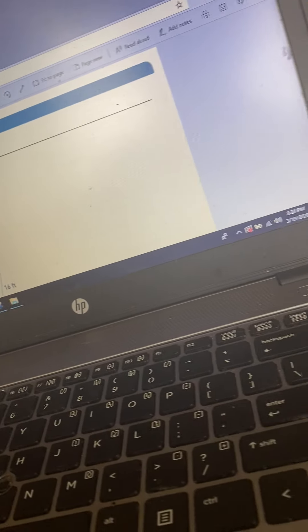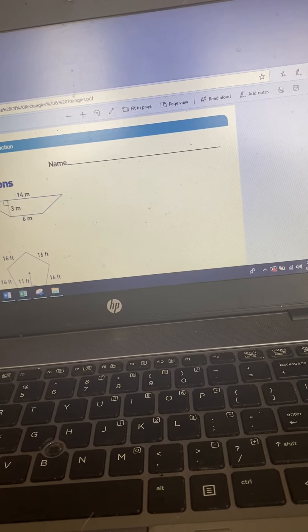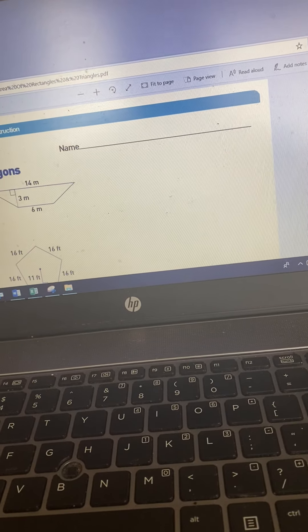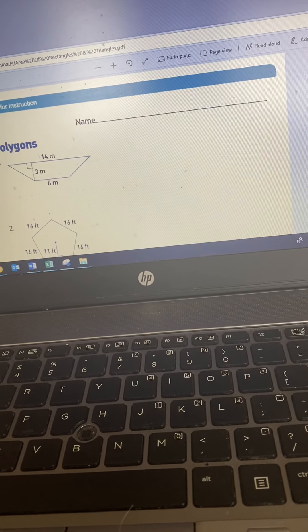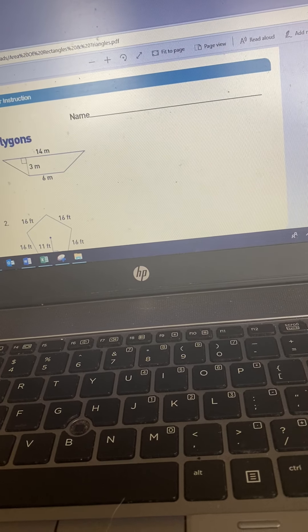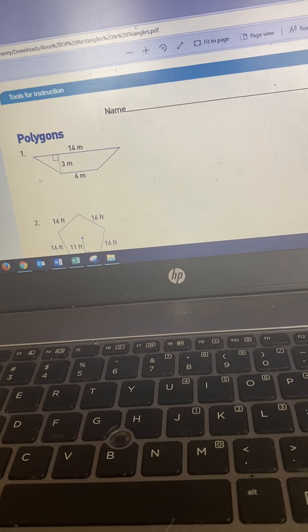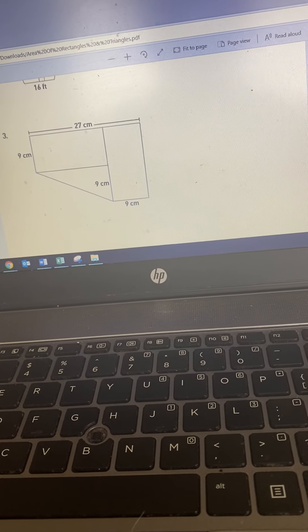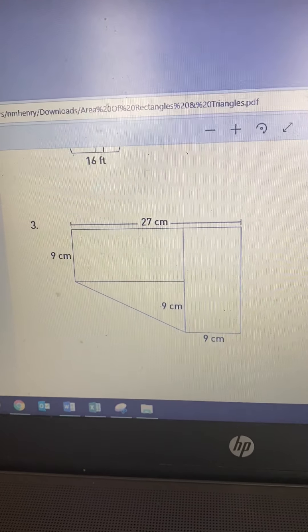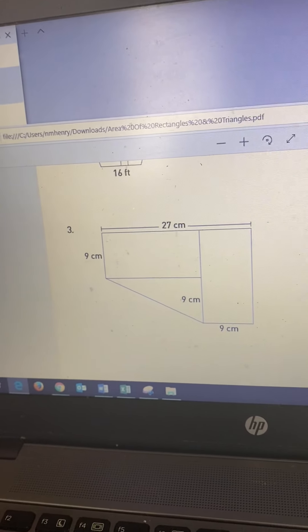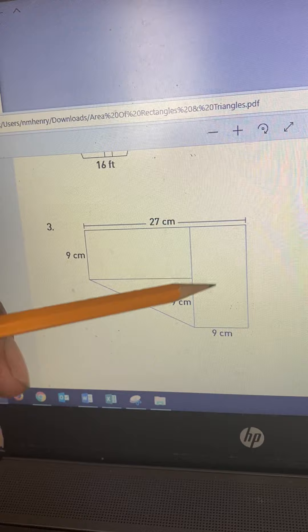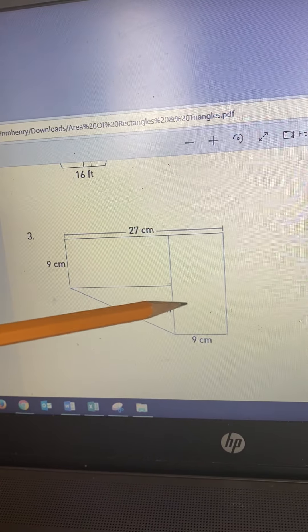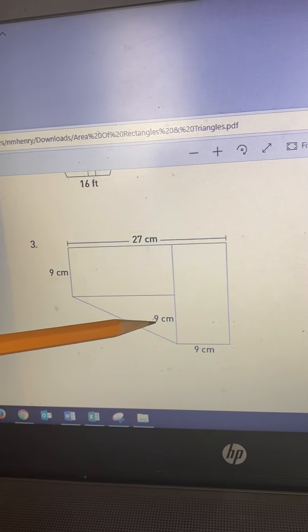If you got that, give yourselves a hand. Now let's go down here and look at number three. My opinion number three is even easier. We have here two rectangles and one triangle.